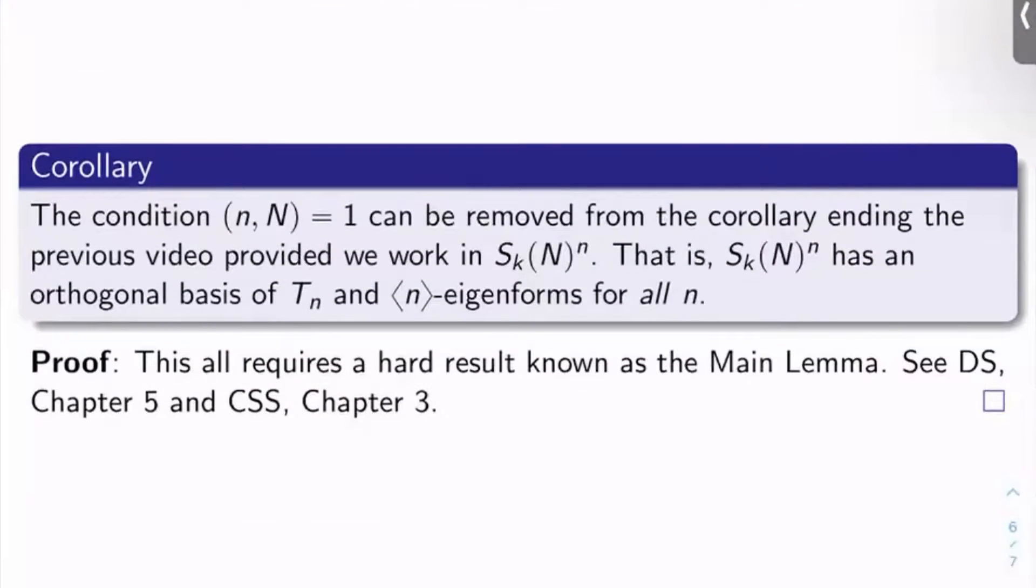And so now we get what we wanted. An immediate corollary is the following. The condition that little n and big N be coprime can be removed from the corollary ending the previous video, provided we work in S_K(N)^N. In other words, S_K(N)^N has an orthogonal basis of T_N and diamond of N eigenforms for all N, not just for all N coprime to big N. This theorem and its corollary that we just got finished discussing, these are hard results, mainly because they require something called the main lemma, which is a tricky result. I would see DS chapter 5 and CSS chapter 3 as usual for discussions about this.